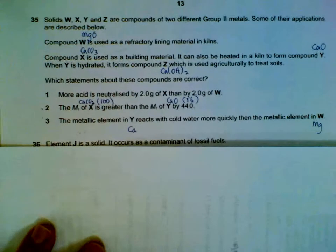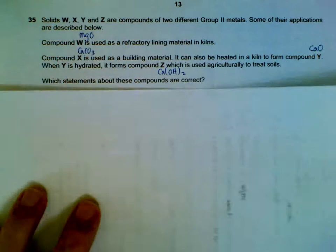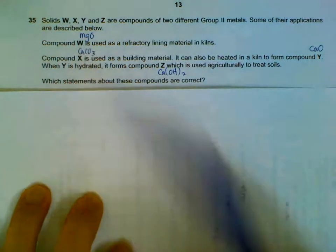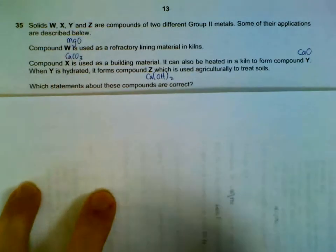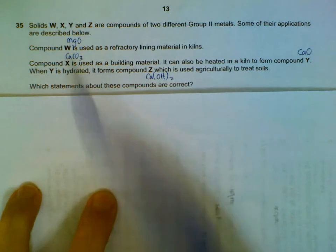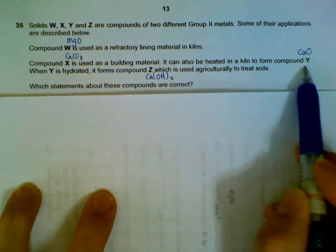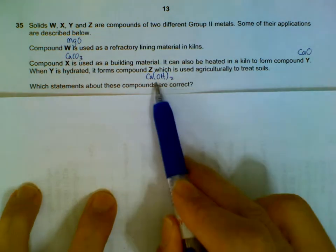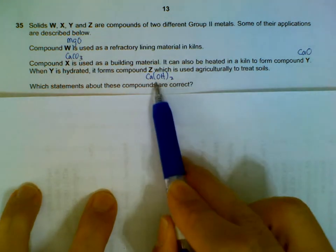Question 35 involves you to be able to know what are your W, X, Y, and Z. W is your magnesium oxide, X is your calcium carbonate, Y calcium oxide, Z will be calcium hydroxide.